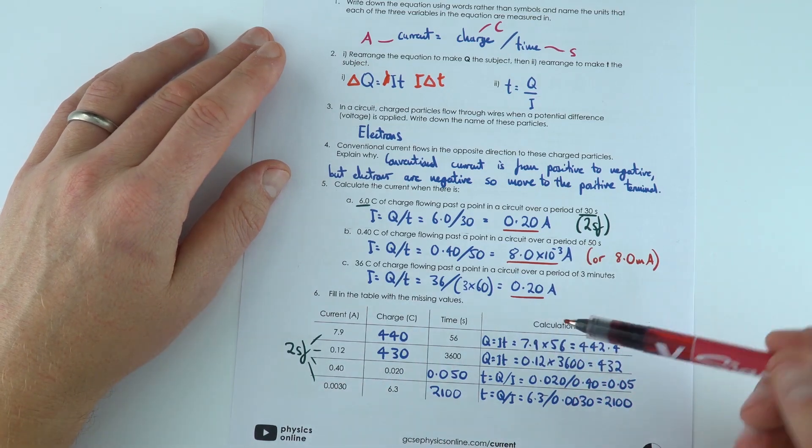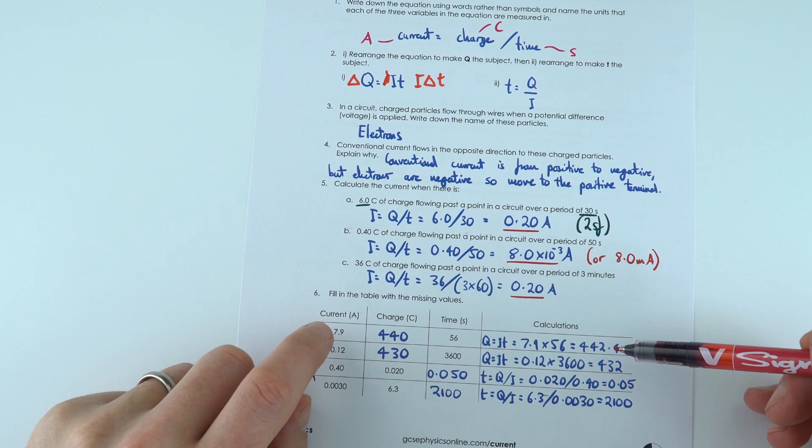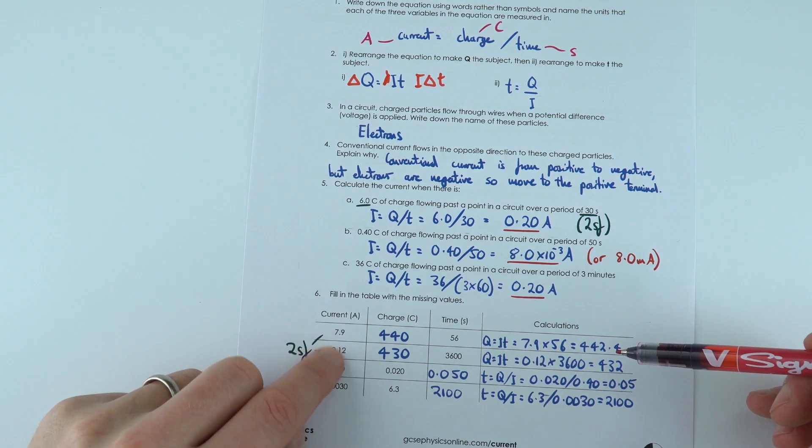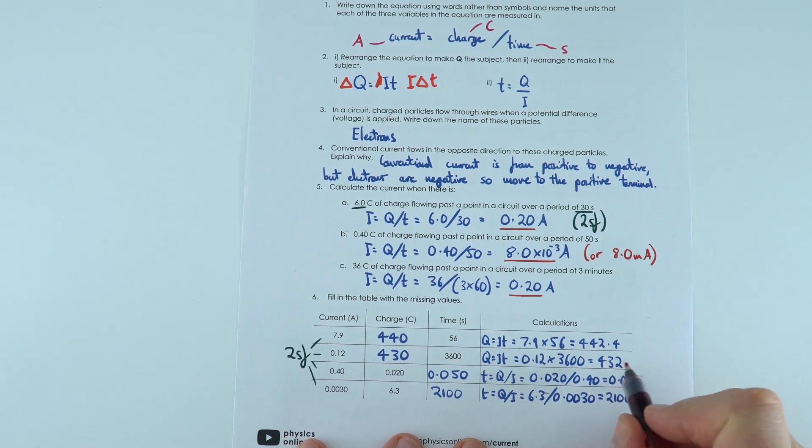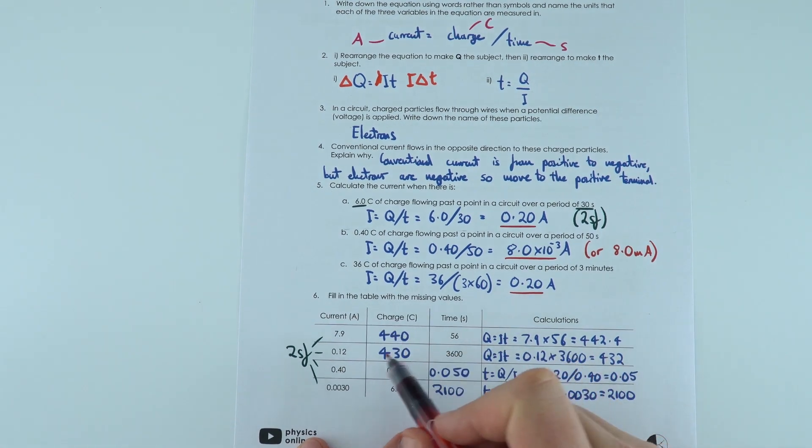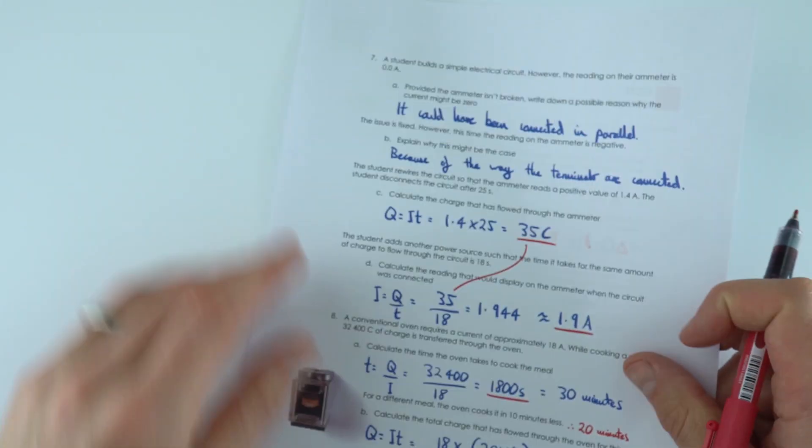This one over here, I selected the right equation, I put the numbers in. And for my answers, because we've got data here given to two significant figures, I've given my answers to two significant figures. So even though the calculated value was 432, I wrote it down as 430. On the other side, we've got some more questions.